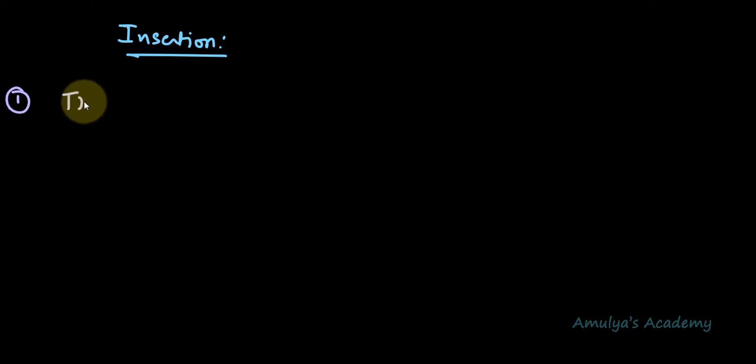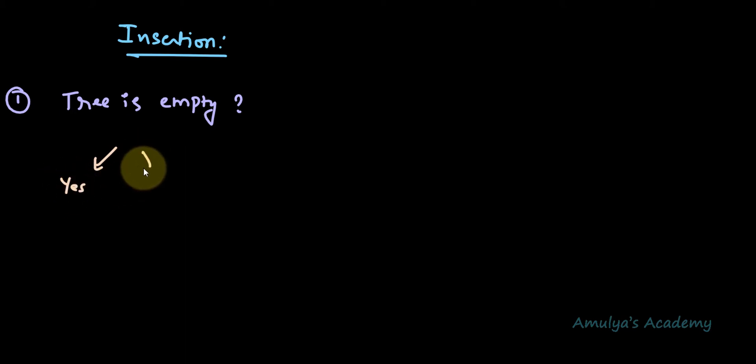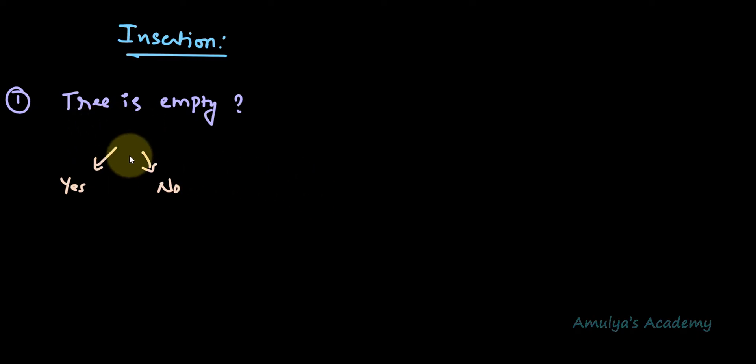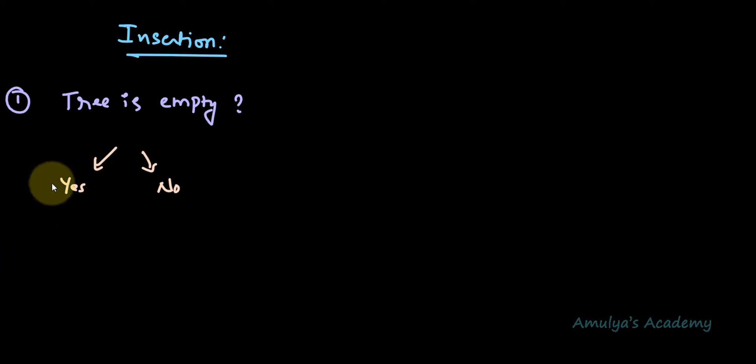While performing the insertion operation we need to check different conditions. The first condition is we need to check whether we are inserting the new node into an empty tree — before inserting the node we need to check whether the tree is empty or not. From this we can get two outcomes: either the tree is empty or non-empty. If the tree is empty, the node we are adding will be the first node of that tree.